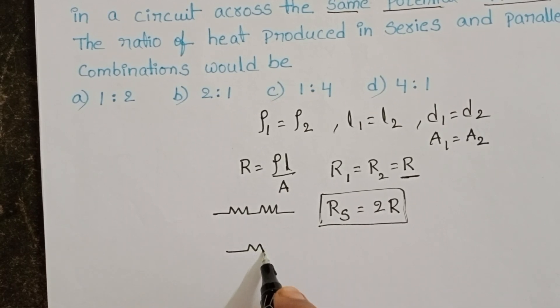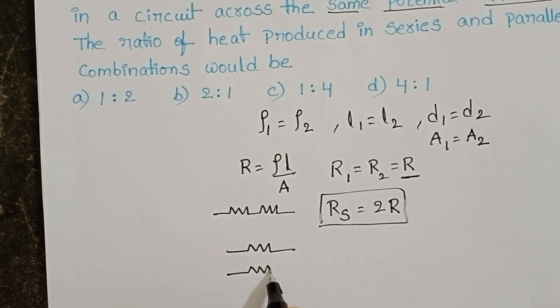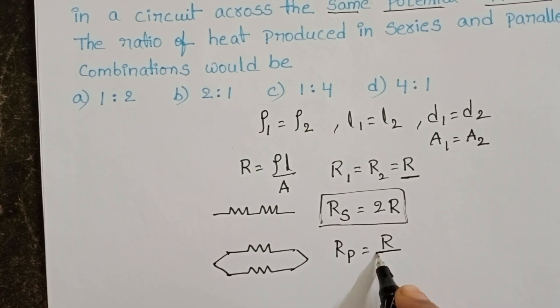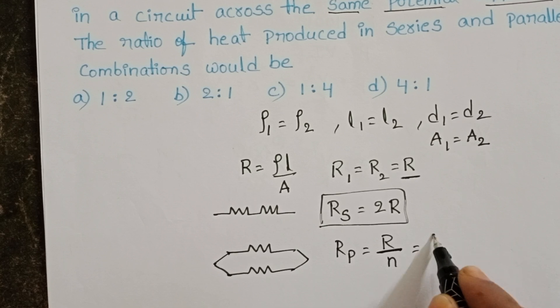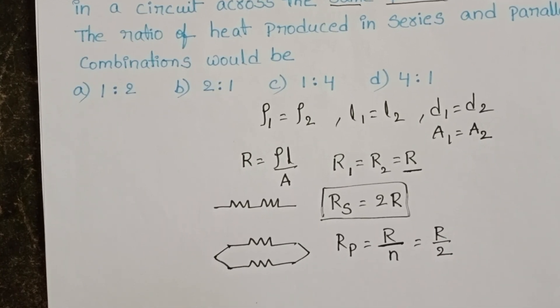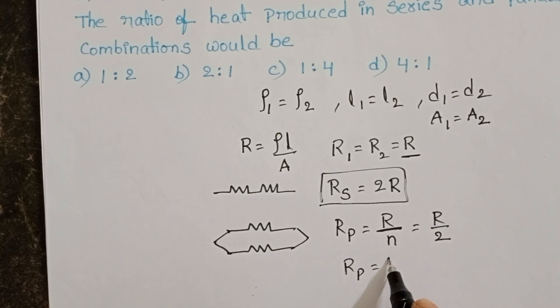After then, these two resistors are connected in parallel. Then equivalent resistance becomes R by N, where N is number of resistors. Number of resistors 2. Then equivalent resistance in parallel combination becomes R by 2.